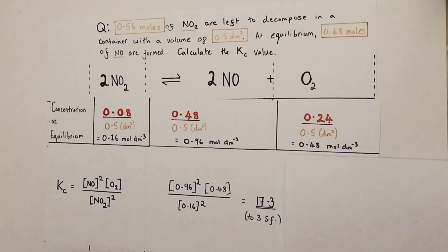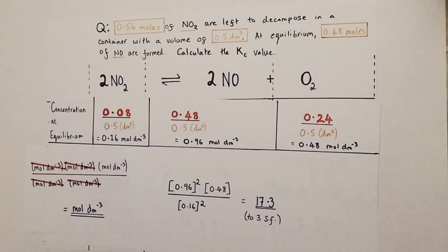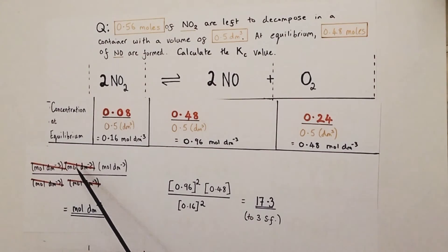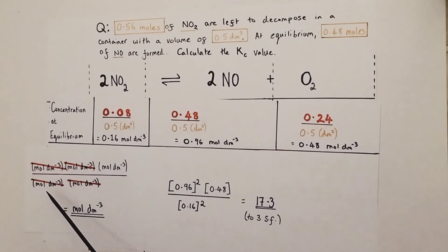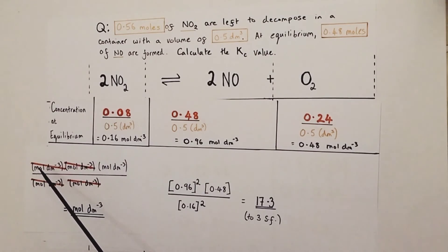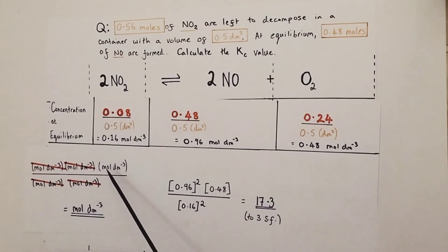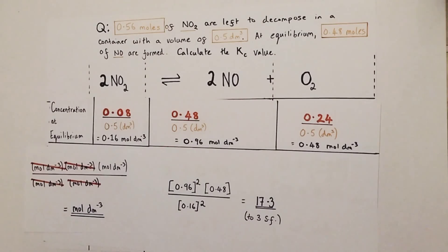We need to work out the unit. We substitute the unit of concentration into the Kc expression: moles per dm⁻³ times moles per dm⁻³ times moles per dm⁻³ on top, divided by moles per dm⁻³ times moles per dm⁻³ below. Two mol/dm⁻³ values cancel top and bottom, leaving us with mol dm⁻³ as the unit for Kc.